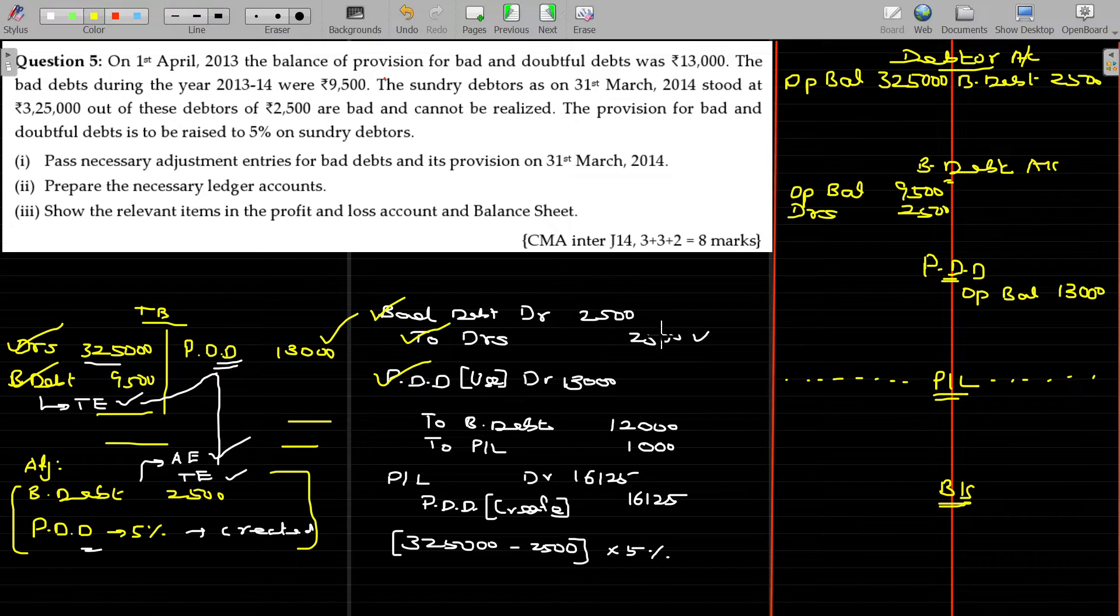In PDD, to bad debt, to bad debt, 12,000. Then to P&L account, 1,000. So we have to post these two.